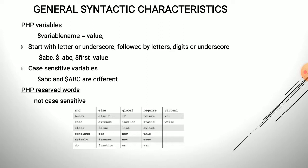All PHP variables begin with a dollar sign — for example, $a = 5. PHP variables are dynamically typed, meaning the type is assigned to a variable when we assign a value to it. If we declare $a with no value, it has no type; but if we write $a = 5, then a is of integer type. PHP is a dynamically typed language.